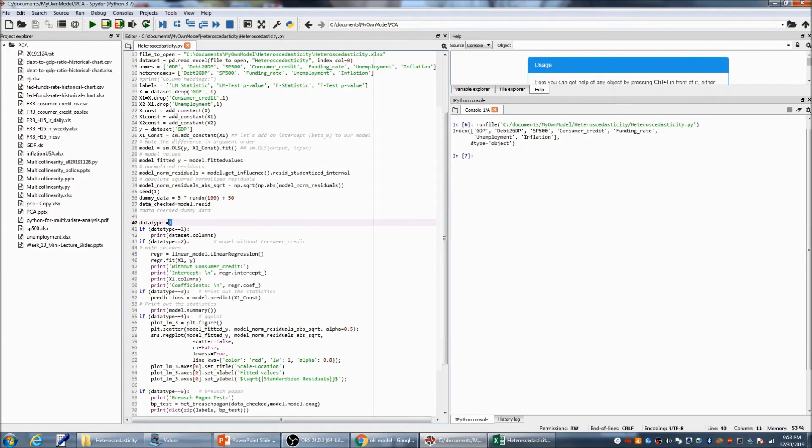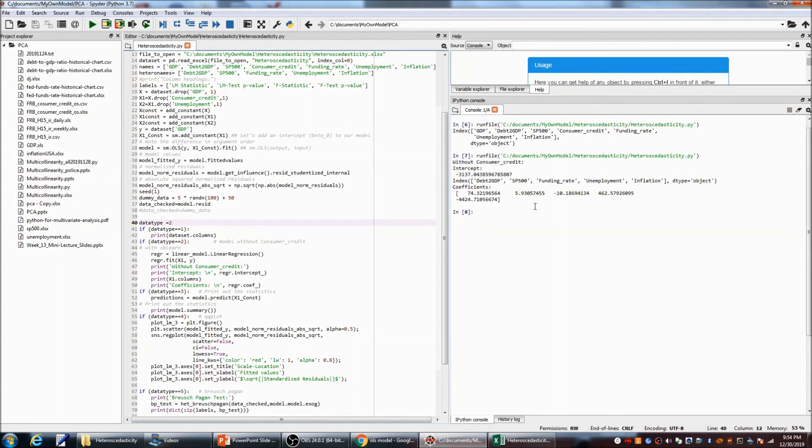Then, I built my model. You can see the intercept here, and all those coefficients for independent variables.